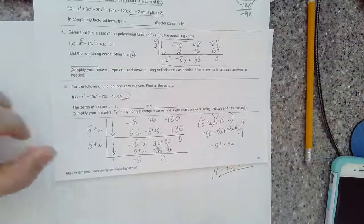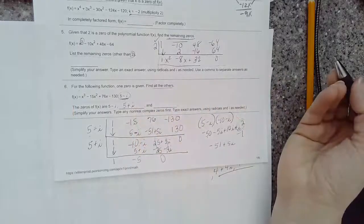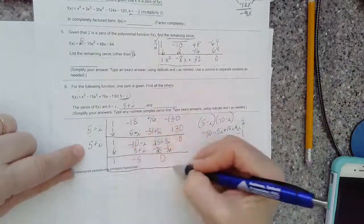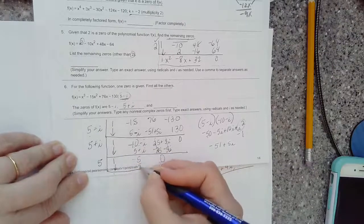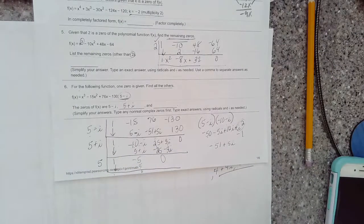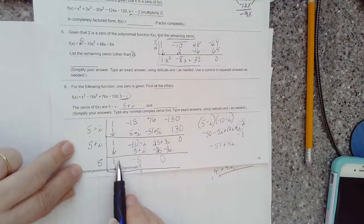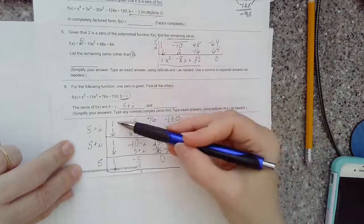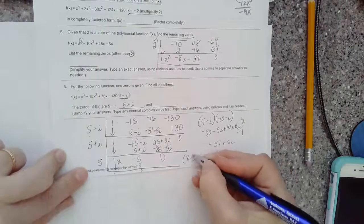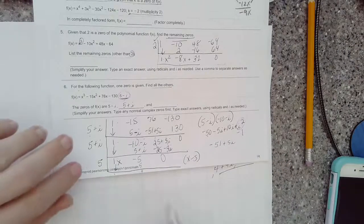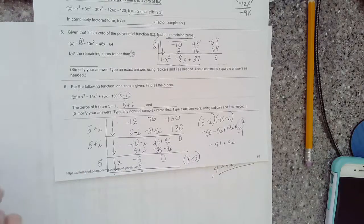So the other remaining zeros, 5 minus i was given, so we find 5 plus i by the conjugate theorem. And then the last one, what works is positive 5. Now how do I know that? On this last row, I'm down to 1x minus 5 as a factor. This represents 1x minus 5 as a factor, the polynomial x minus 5. So if that is the factor, I know the solution is the opposite sign positive 5.